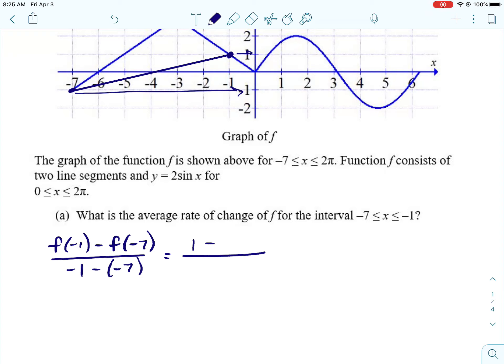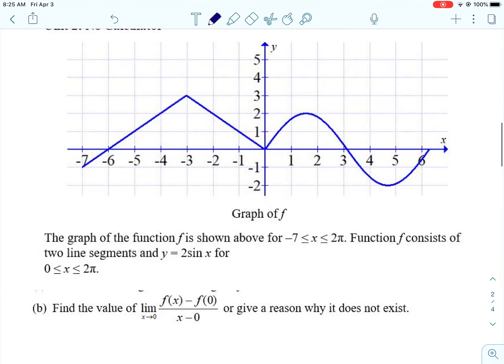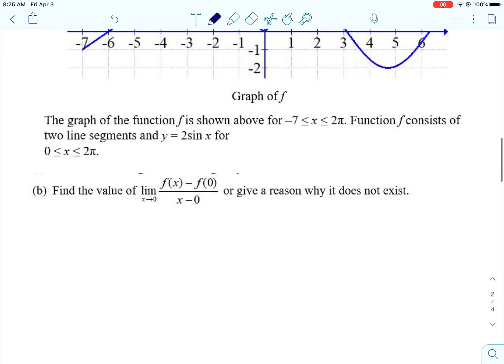Alright, and then we can get F of negative 1 from our graph. F of negative 1 is at 1. Alright, F of negative 7 is at negative 1. Alright, and then that denominator is just going to be a 6. So we end up with 2 sixths or 1 third. Alright, that's not too terrible.